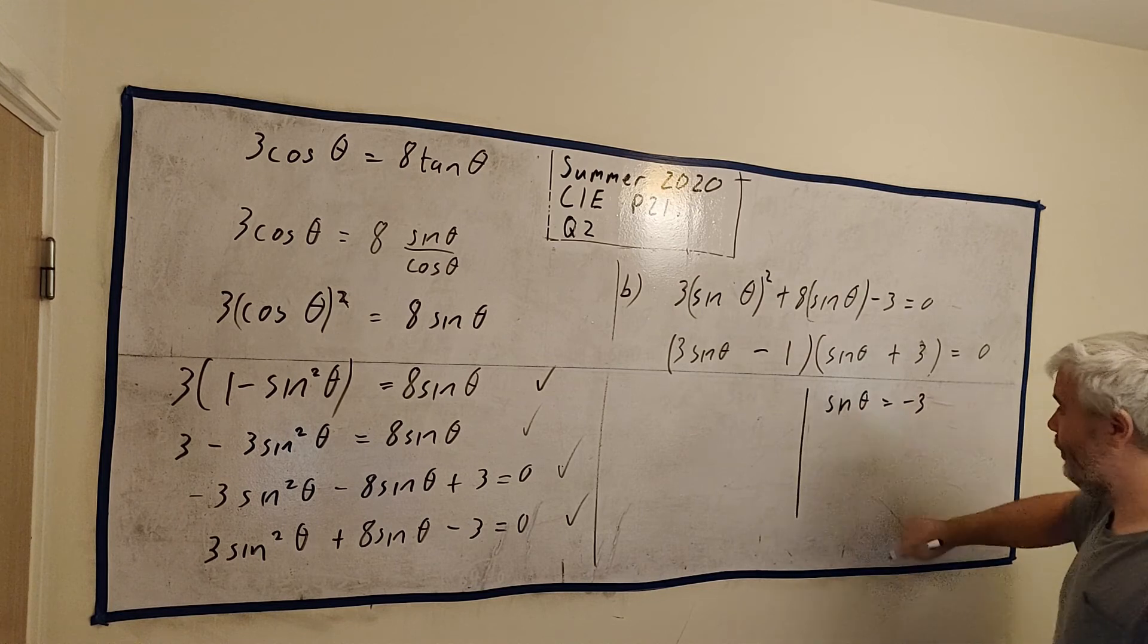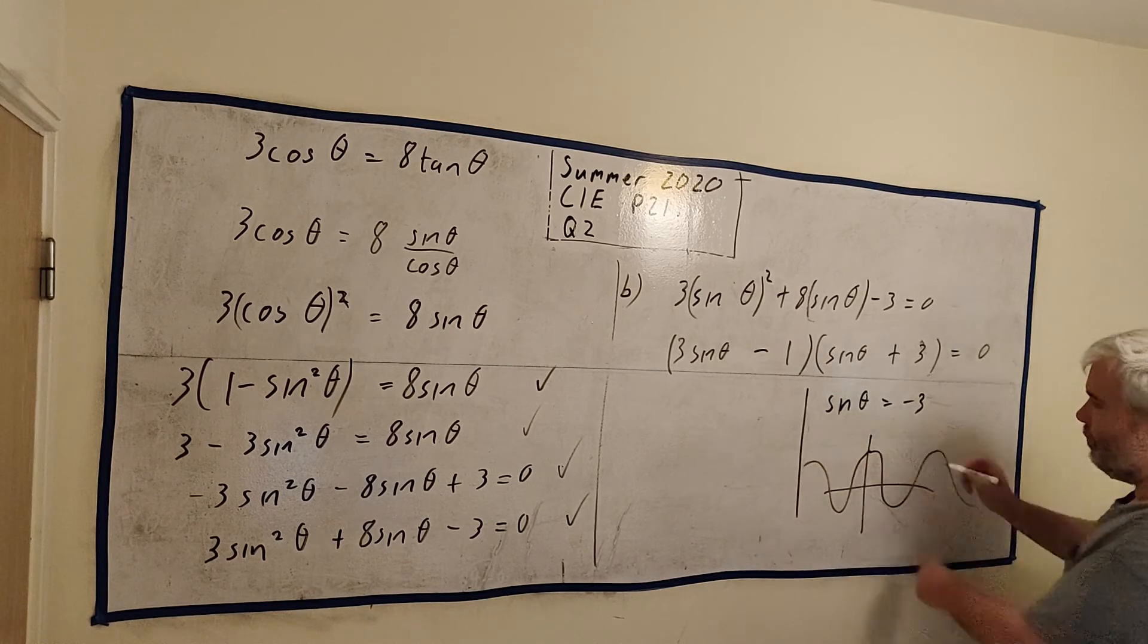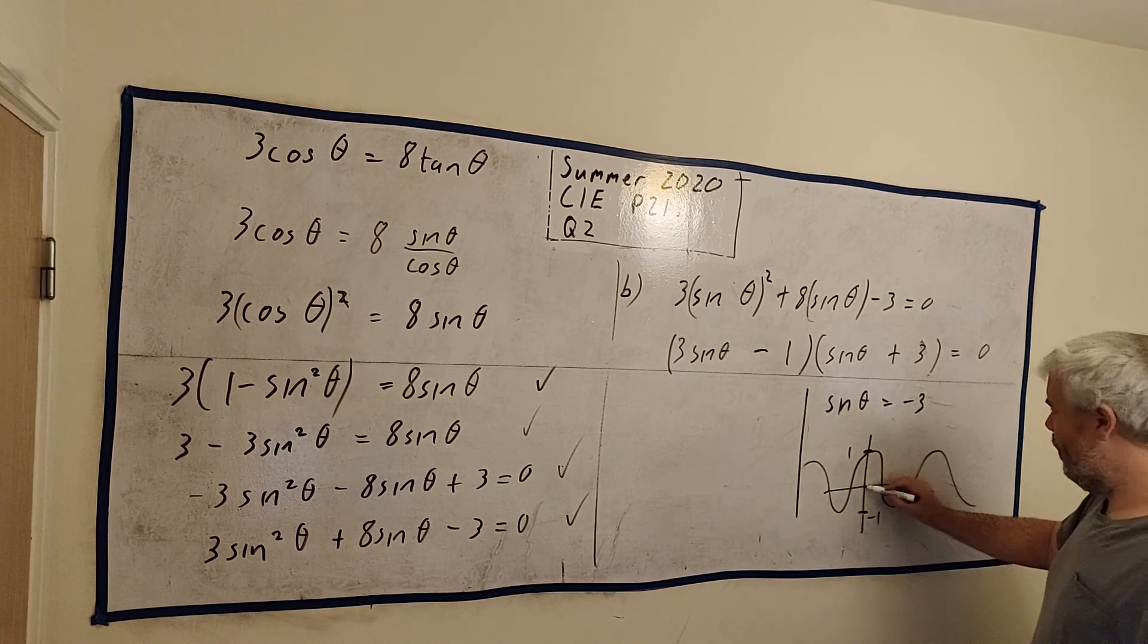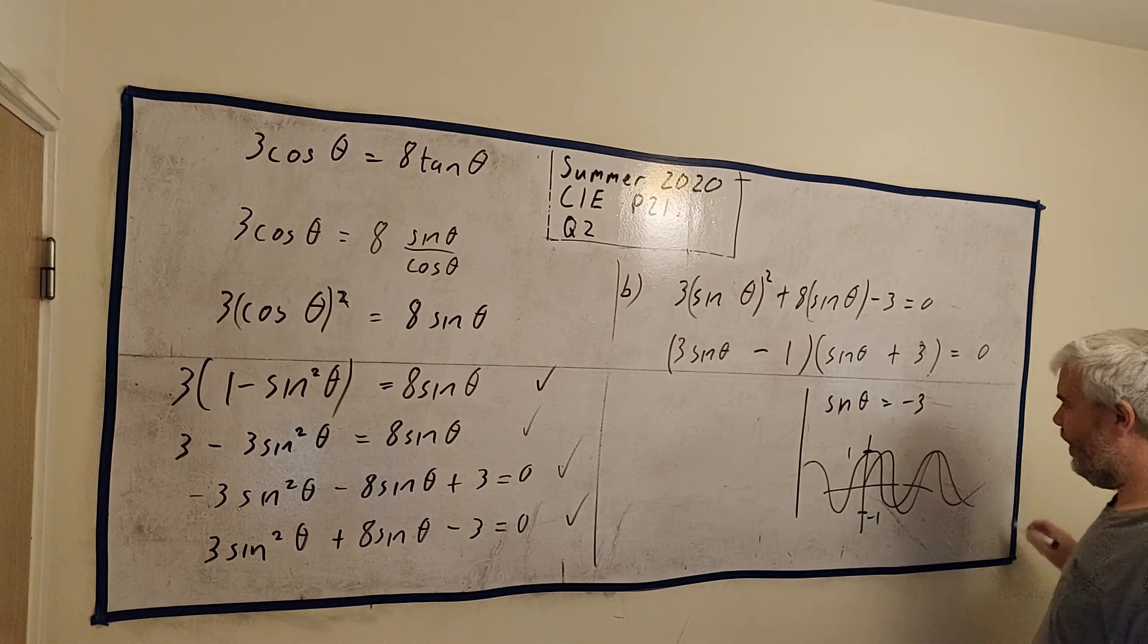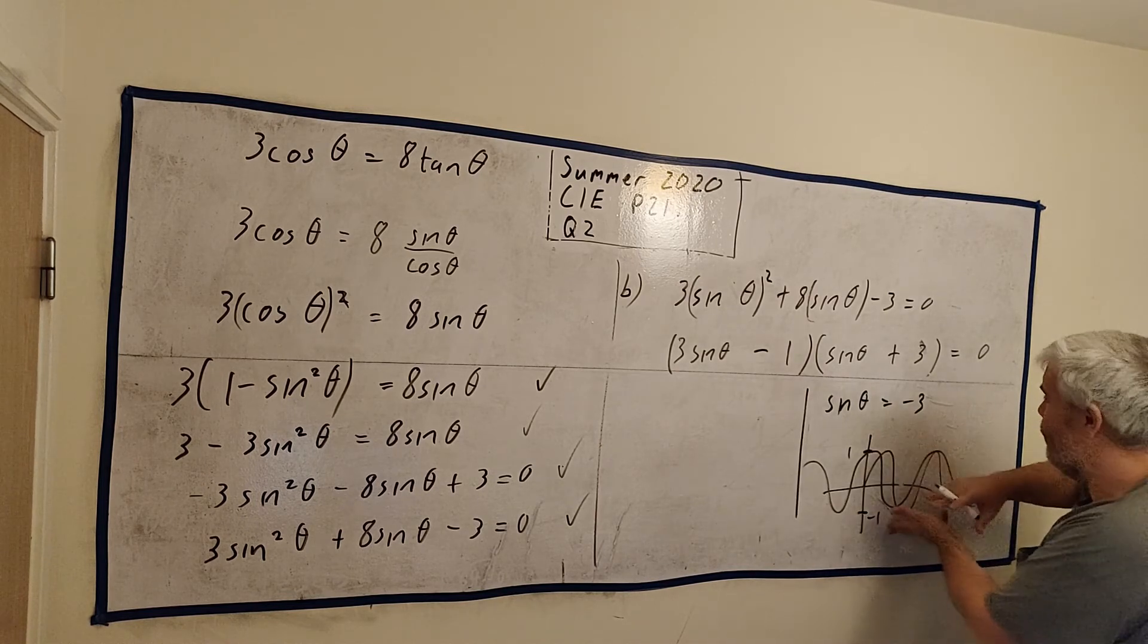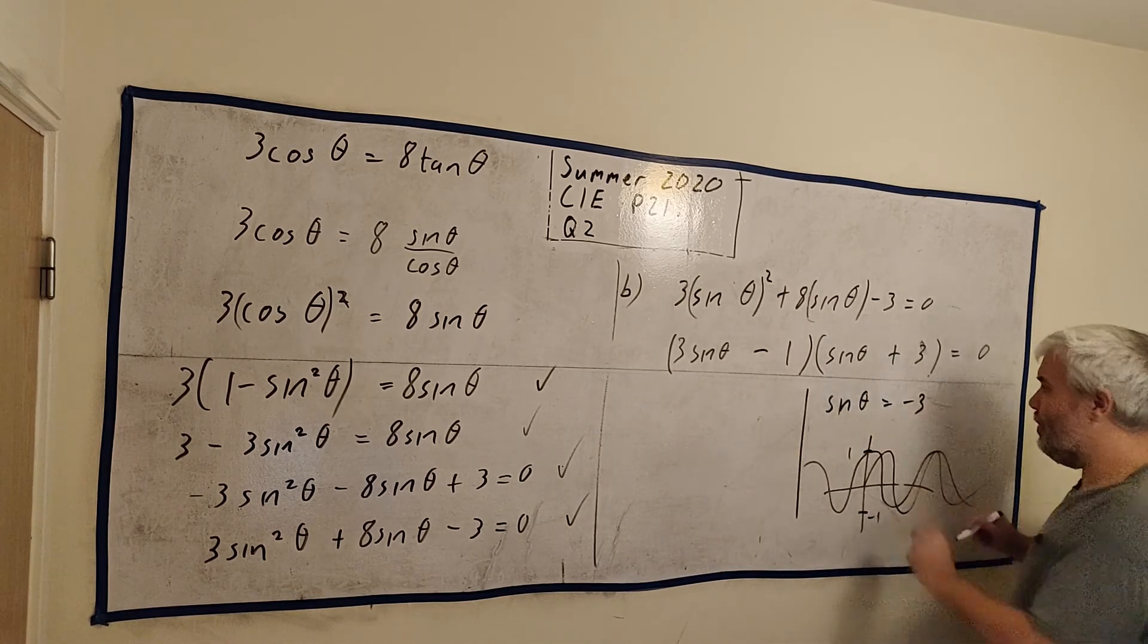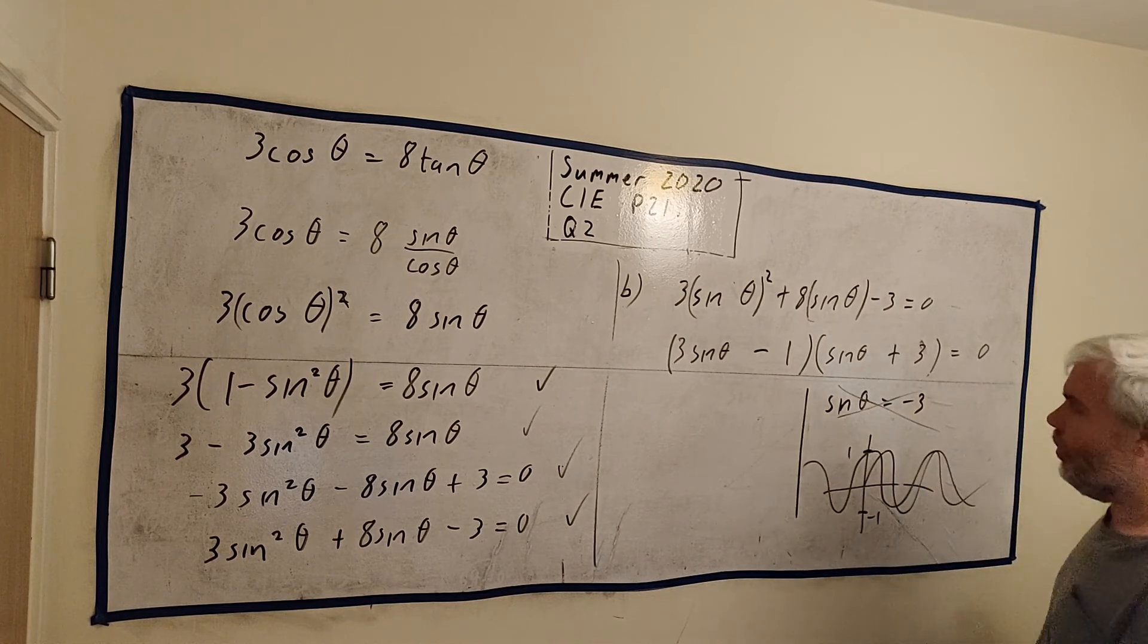Right. So we get two answers here. I'll do this one first because it's interesting. Sine theta is equal minus 3. Well, that's impossible. Remember what sine looks like. It's always in this world. The highest it ever gets is 1. And the lowest it ever gets is minus 1. So actually, sorry, that's cosine I drew. Sine is here somewhere. It's the same, though. It's between 1 and minus 1. Sine theta will never be minus 3. That is not going to be the right answer.